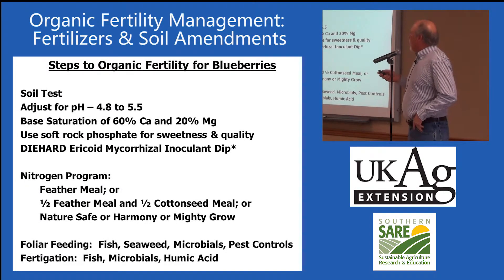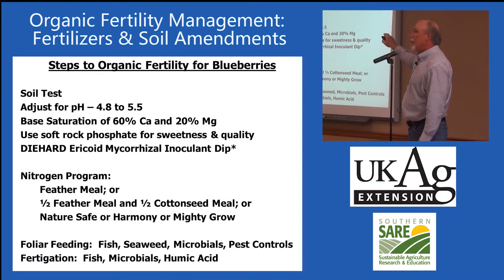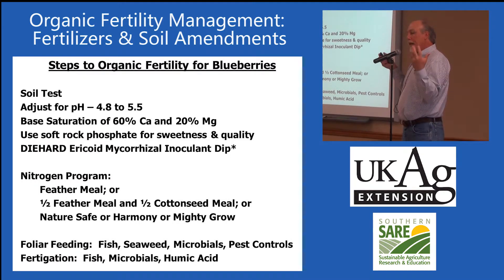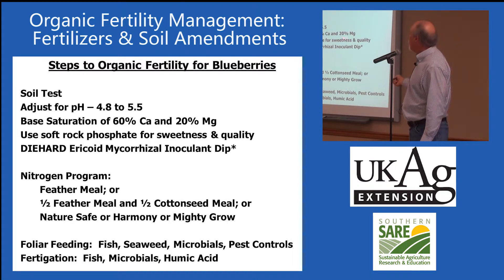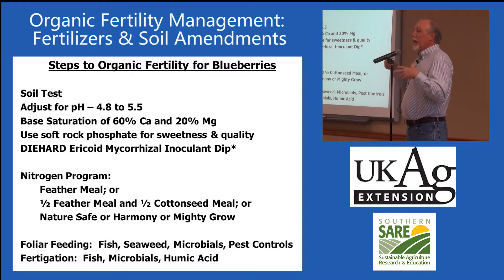Here are some steps to organic fertility for blueberries. Step one is to soil test and adjust pH. My recommended pH range for blueberries is between 4.8 and 5.5. On base saturation, because blueberries are more of a magnesium lover, aim for calcium saturation at 60% and magnesium at 20%. I recommend soft rock phosphate for sweetness and quality — it doesn't hurt to add phosphorus even though blueberries don't require a lot.